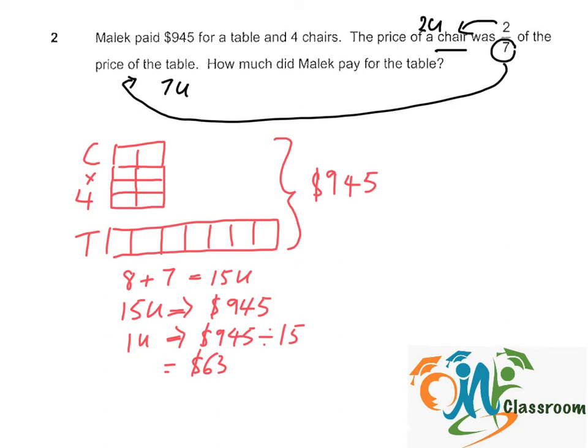And to find the cost of the table, which is 7 units, we just need to take $63 multiplied by 7. That would be $441.